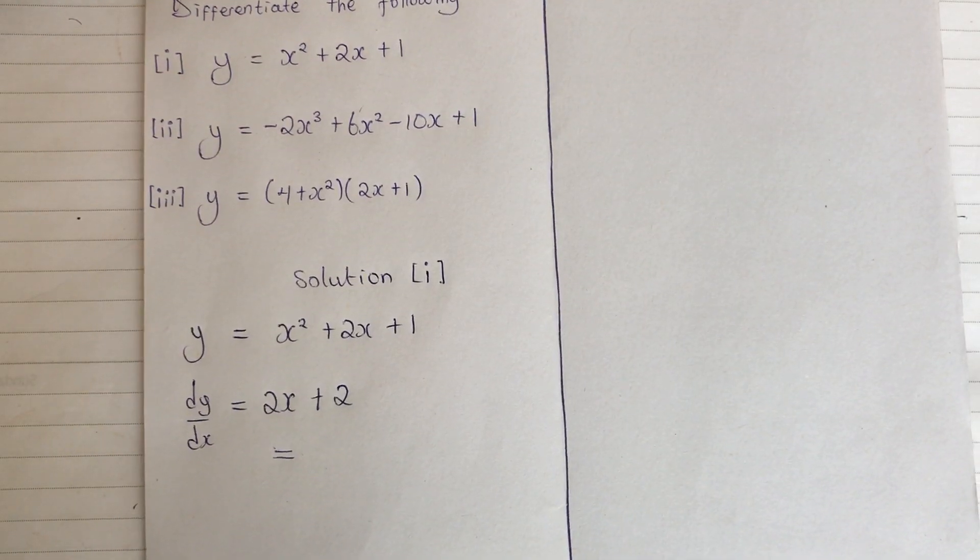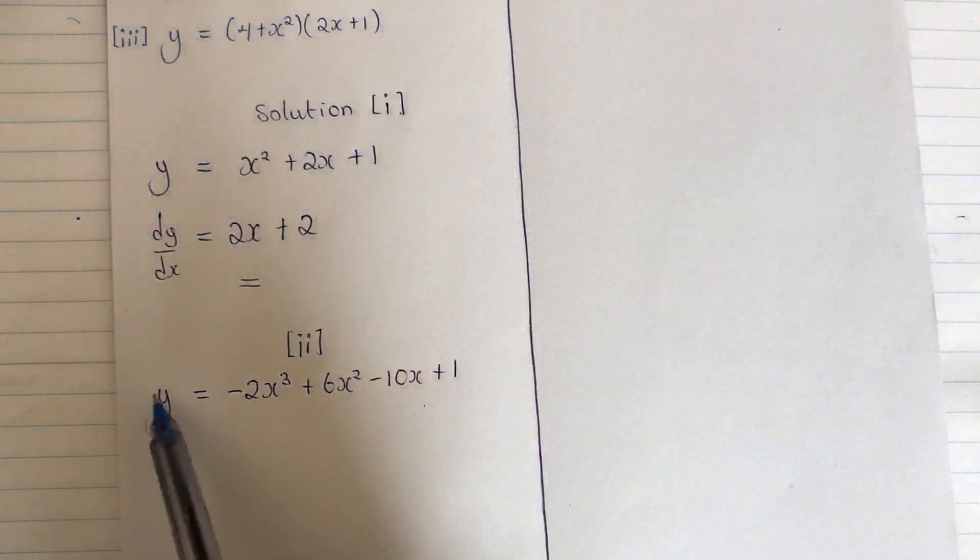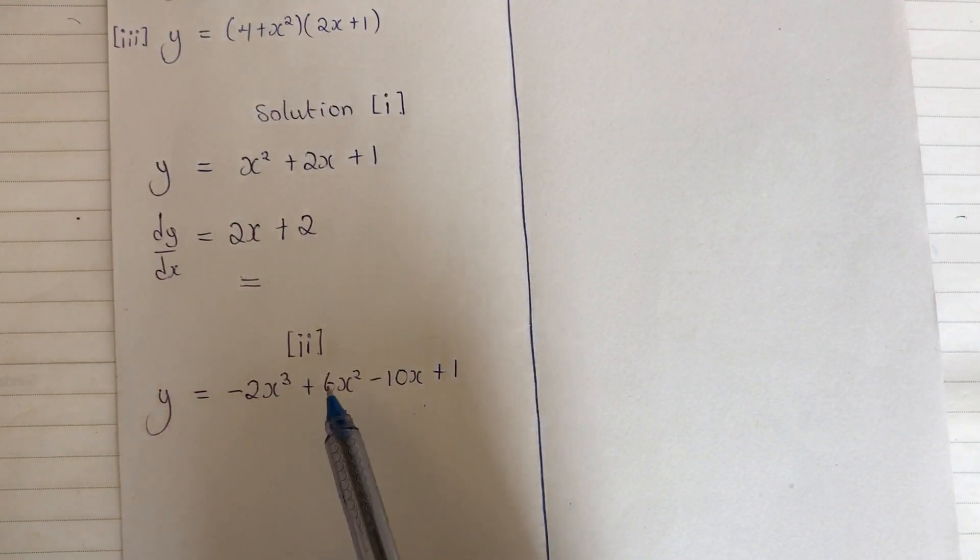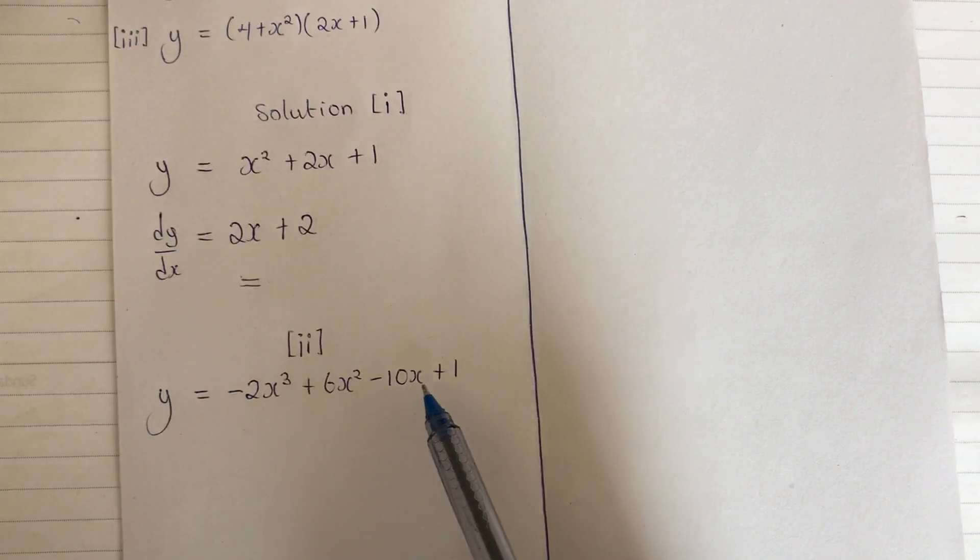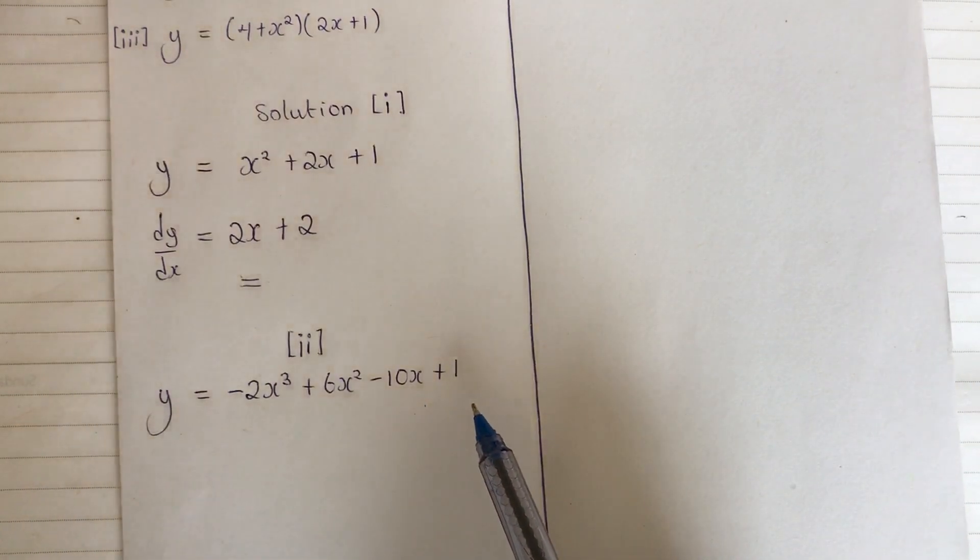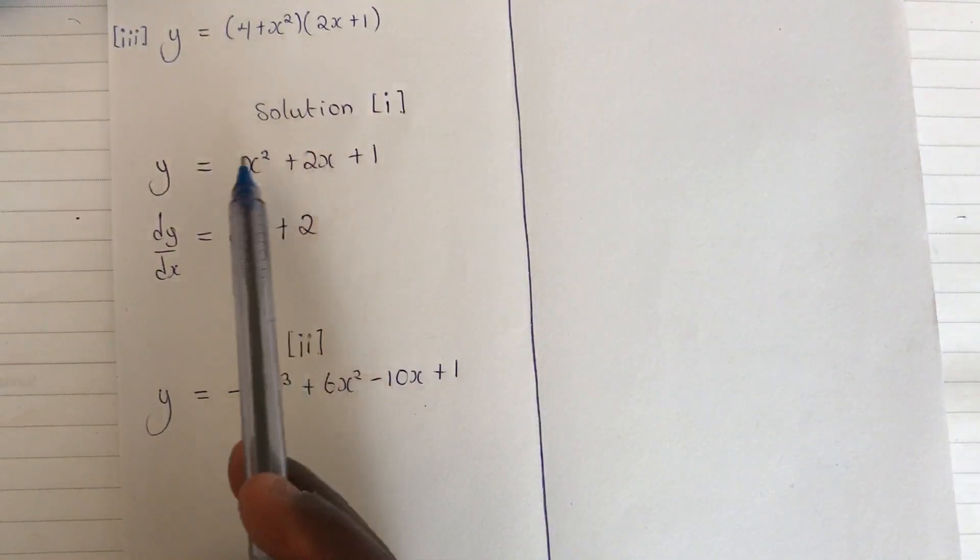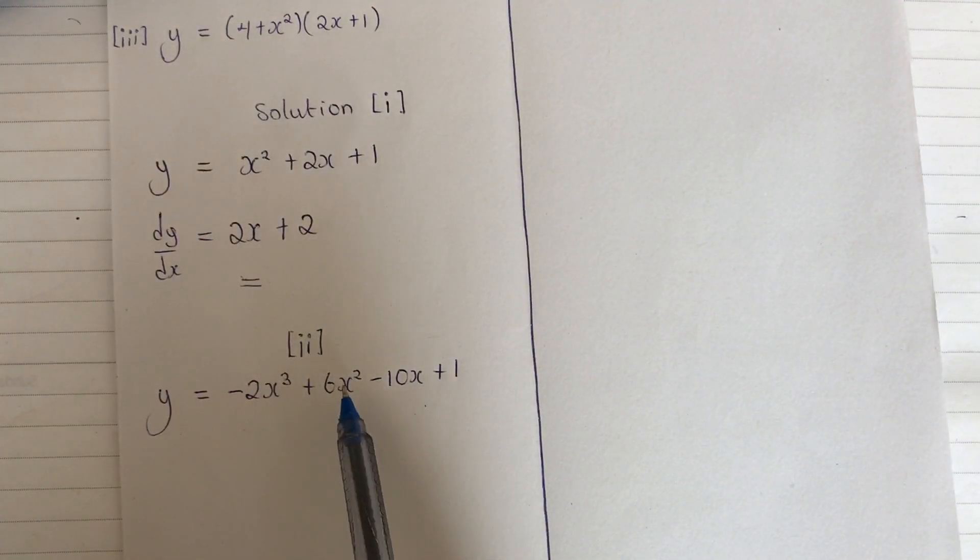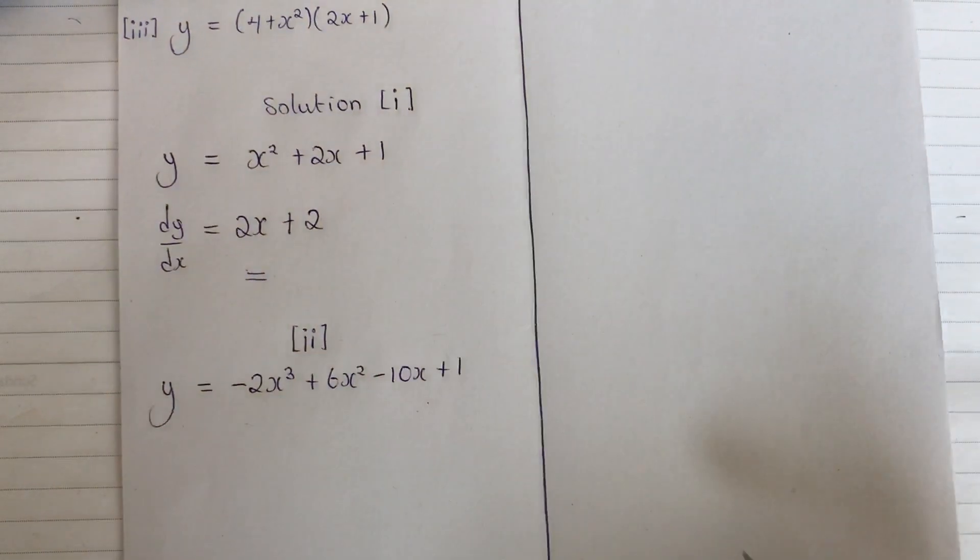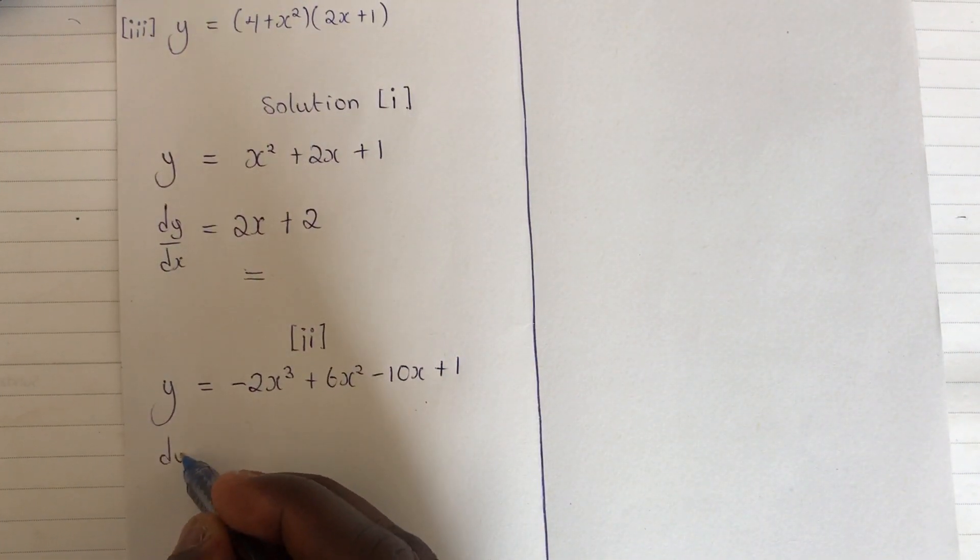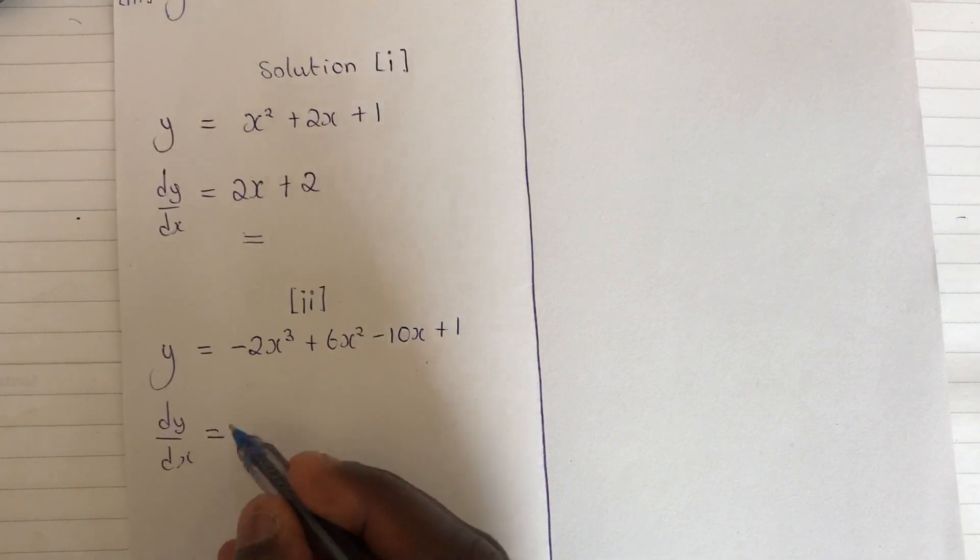So now let's move to question number two. We have y equals minus 2x cubed plus 6x squared minus 10x plus 1. Now to differentiate this, we just differentiate the function term by term like the way I did this one. Differentiate this one first, you move on here, and so on. So we have our dy/dx equals: